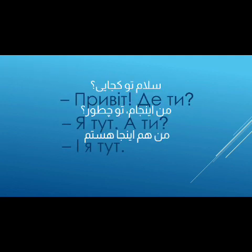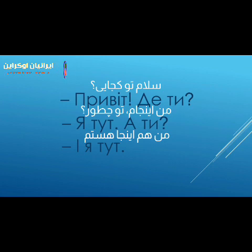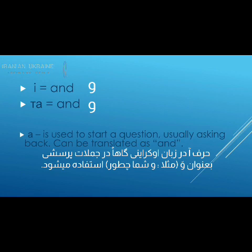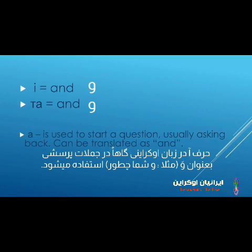Listen to this dialogue. ПРИВІТ! ДЕ ТИ? Я ТУТ. А ТИ? І Я ТУТ. Let's translate it now. Hello. Where are you? I am here. And you? And I am here. And in Ukrainian is І. Or we also have the variant ТА. In this dialogue you can also hear А in the phrase А ТИ – and you – which is used to start a question, usually asking back.